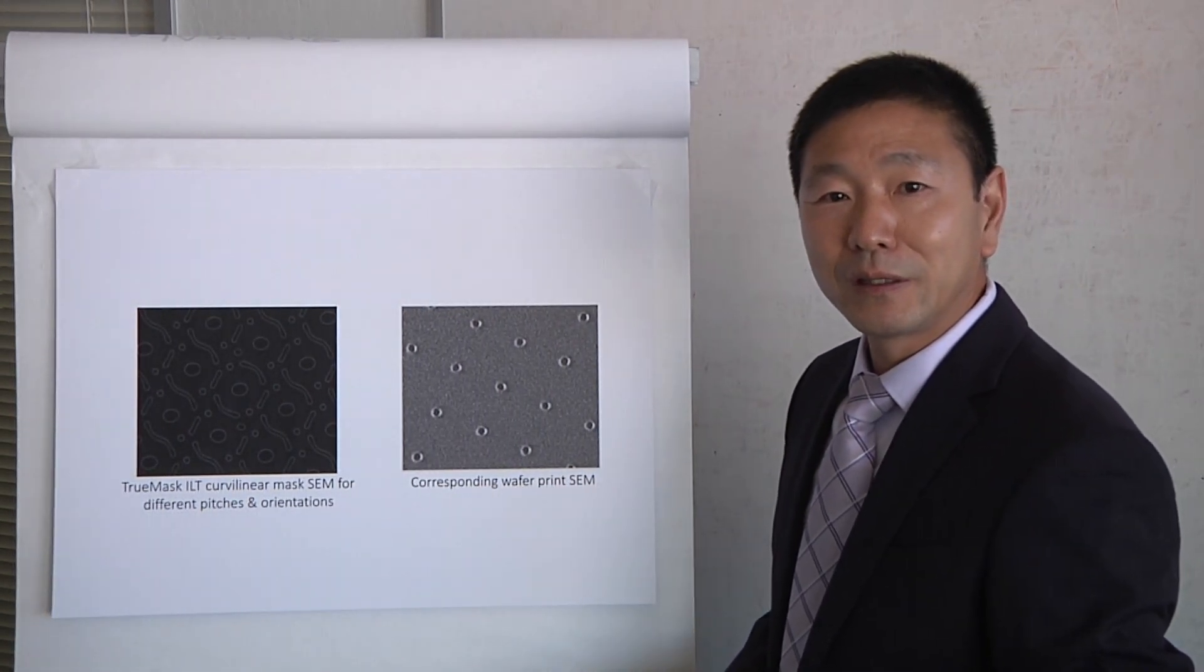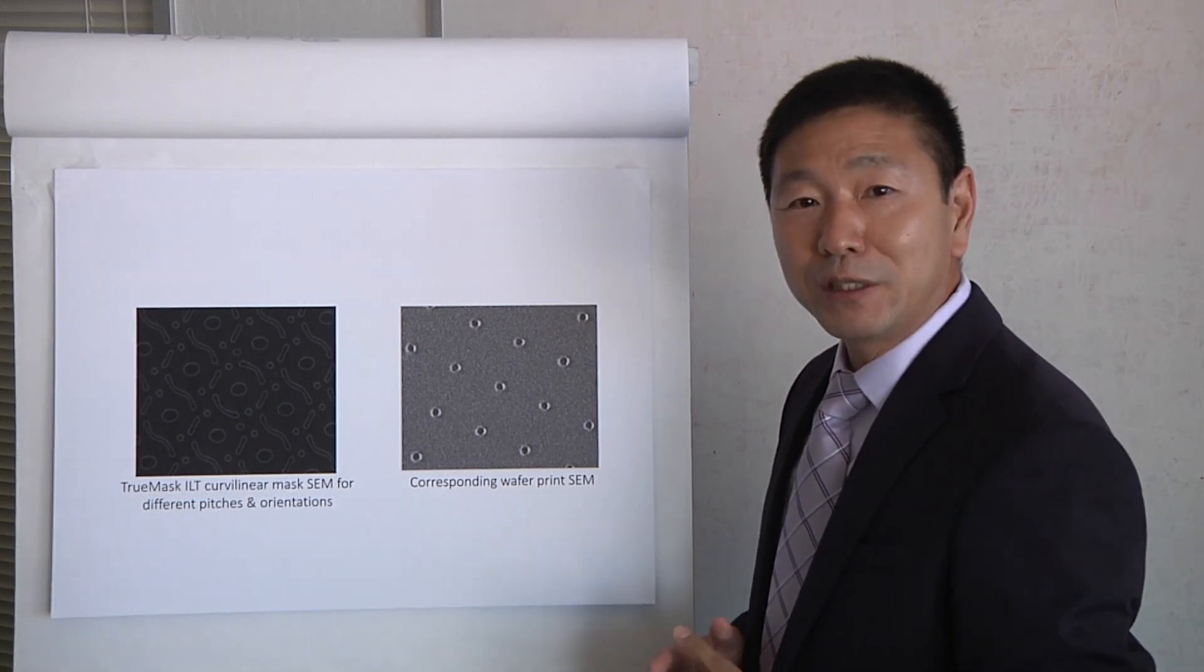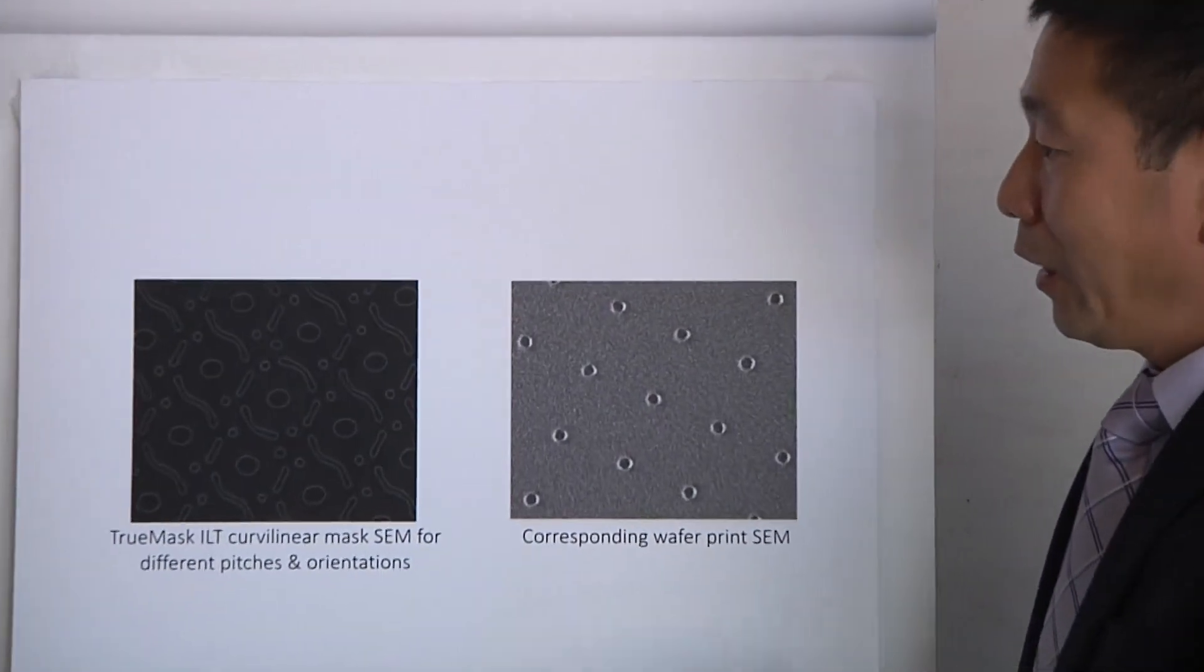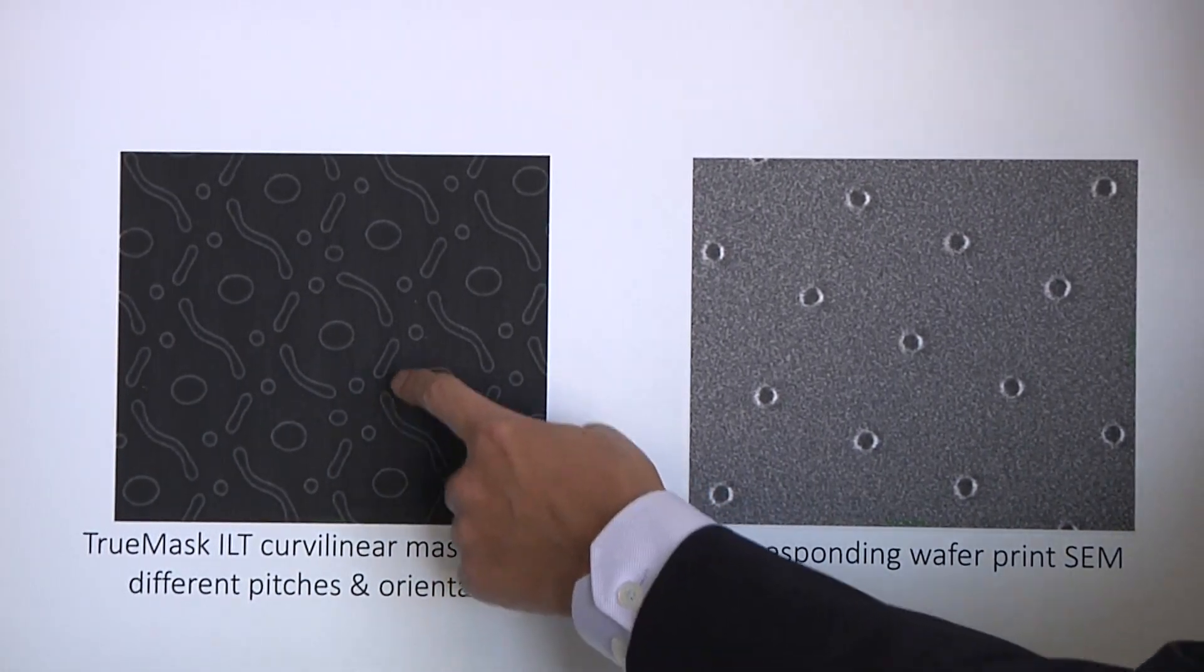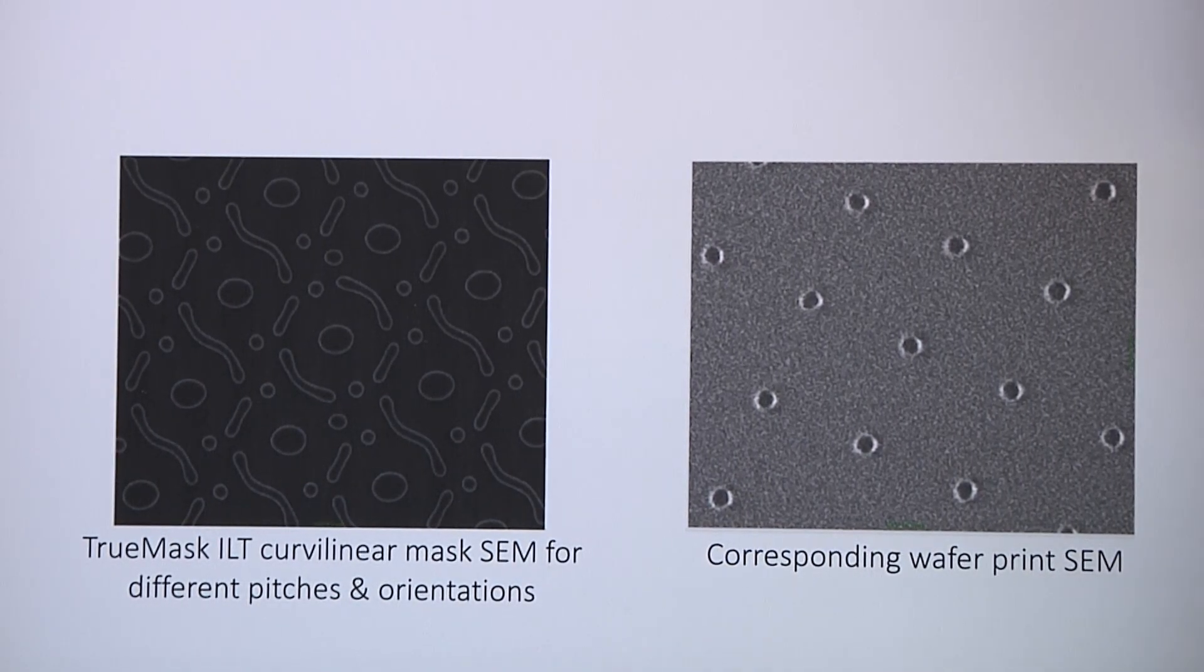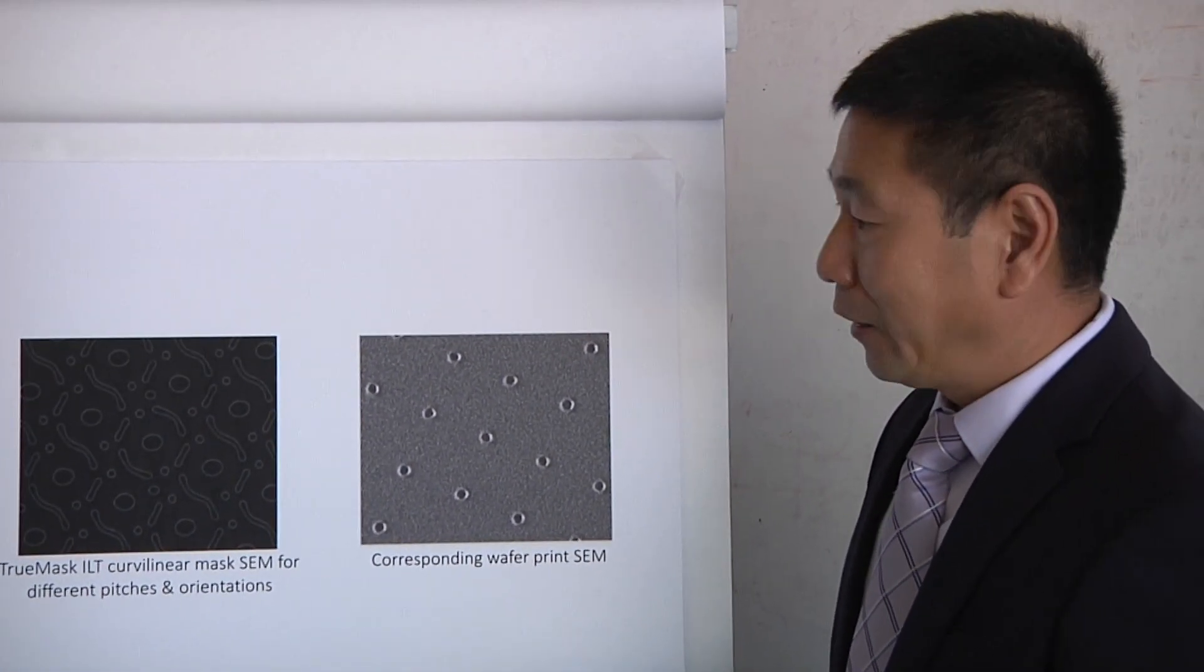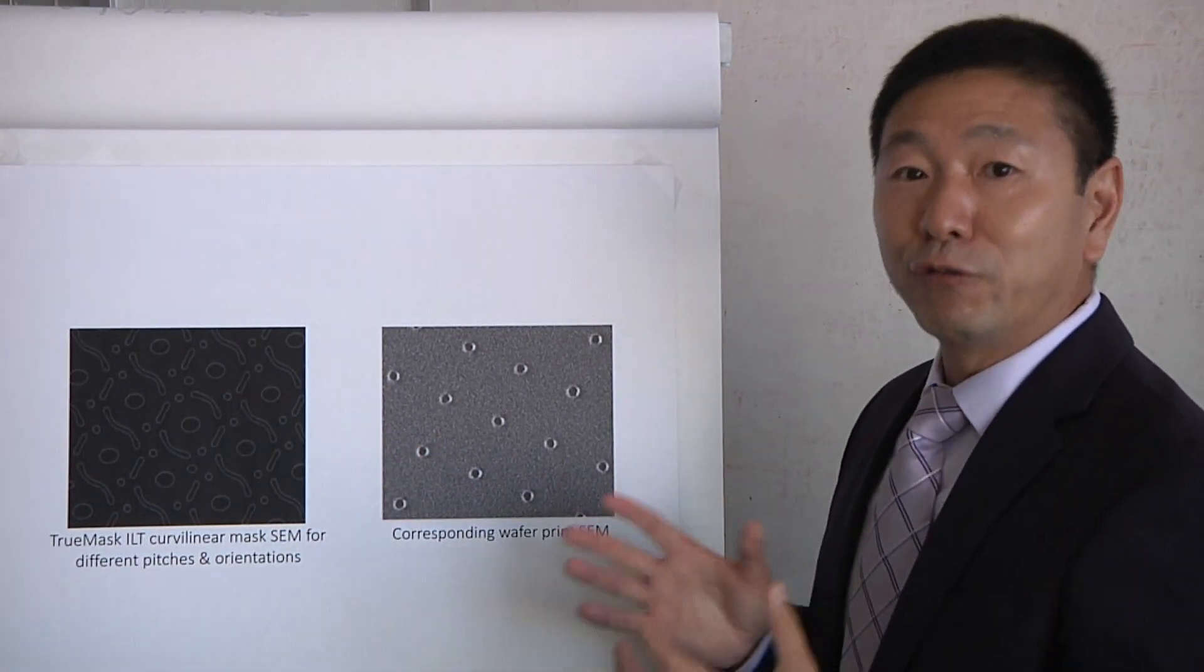Why now? What's changed in the industry? Before, creating curvilinear patterns on masks was very difficult. The mask industry invented multi-beam mask writers, which can write all kinds of shapes in constant write time. With that, the industry really needs something to generate curvilinear data. We can actually create curvilinear ILT for full chip in one day.